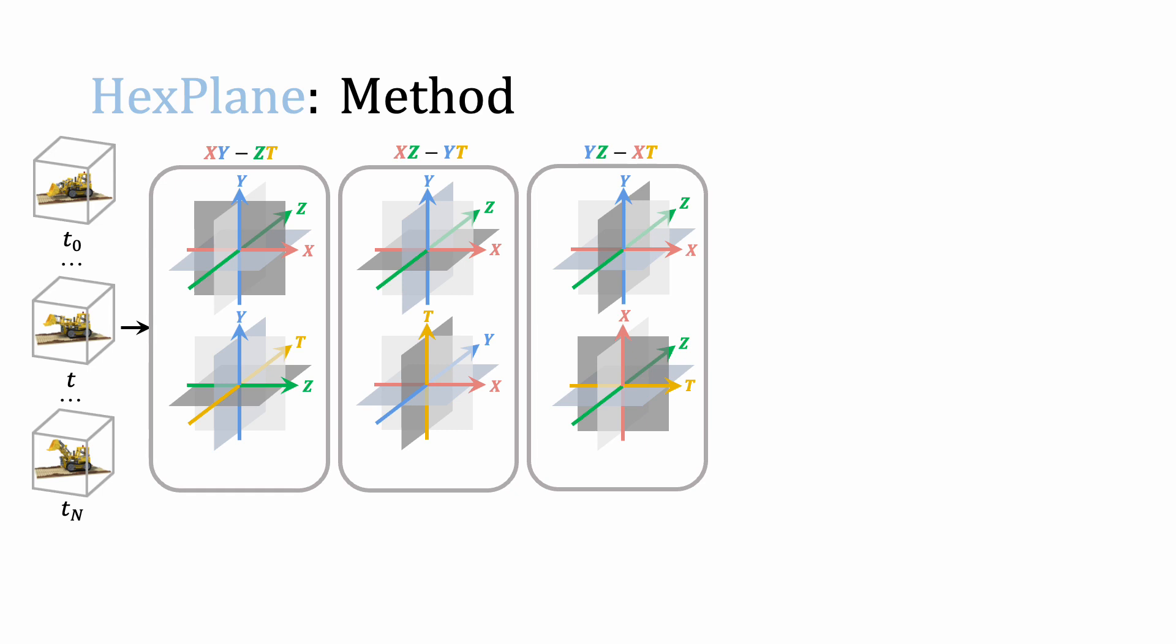More specifically, HexPlane decomposes a 4D spacetime grid into six feature planes spanning each pair of coordinate axes, like XY and ZT planes.